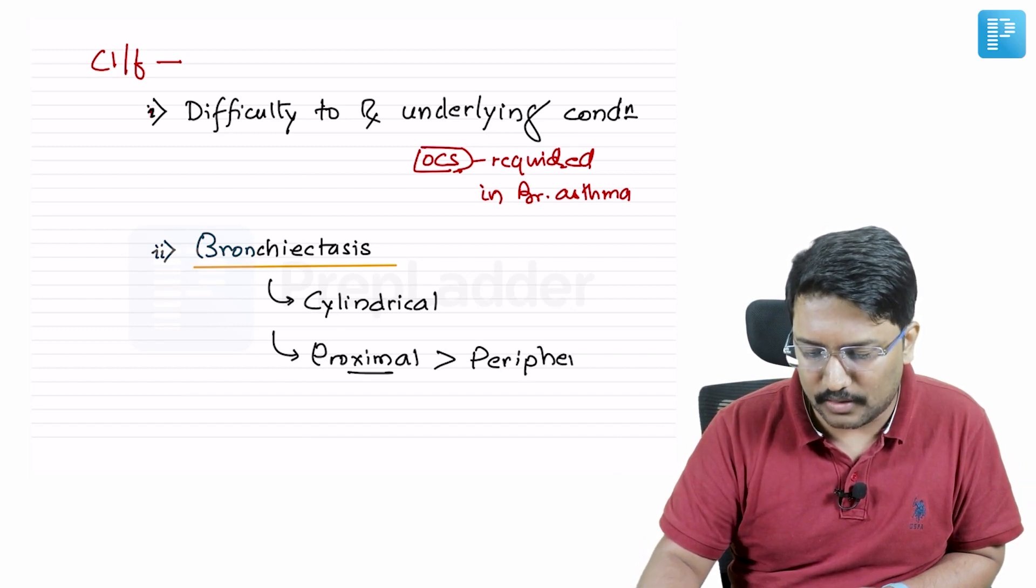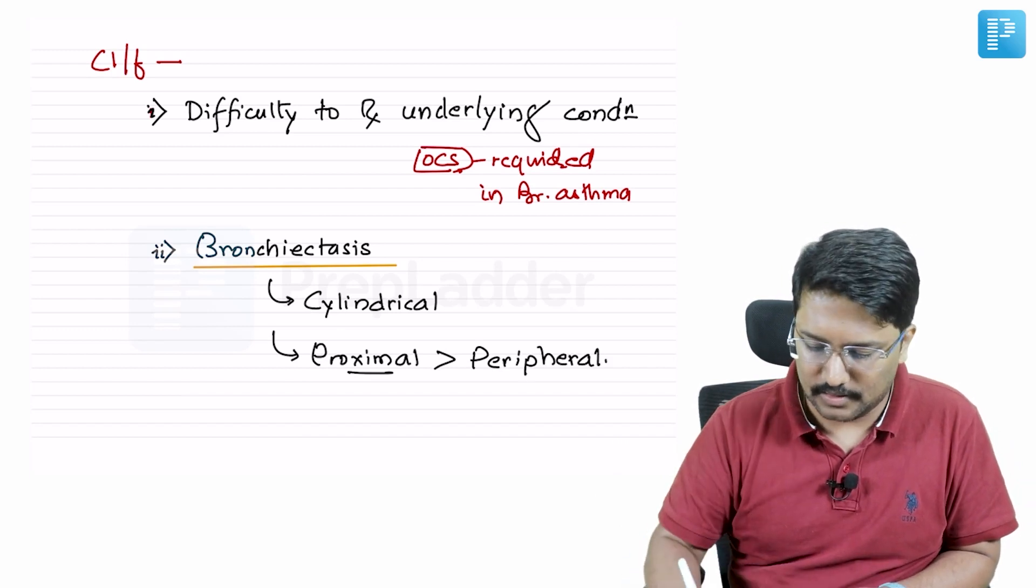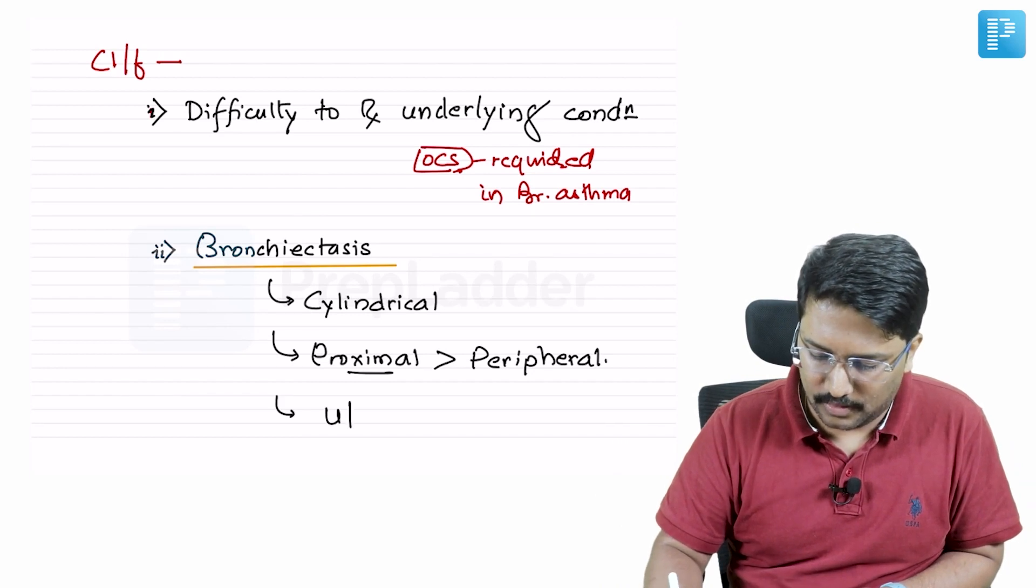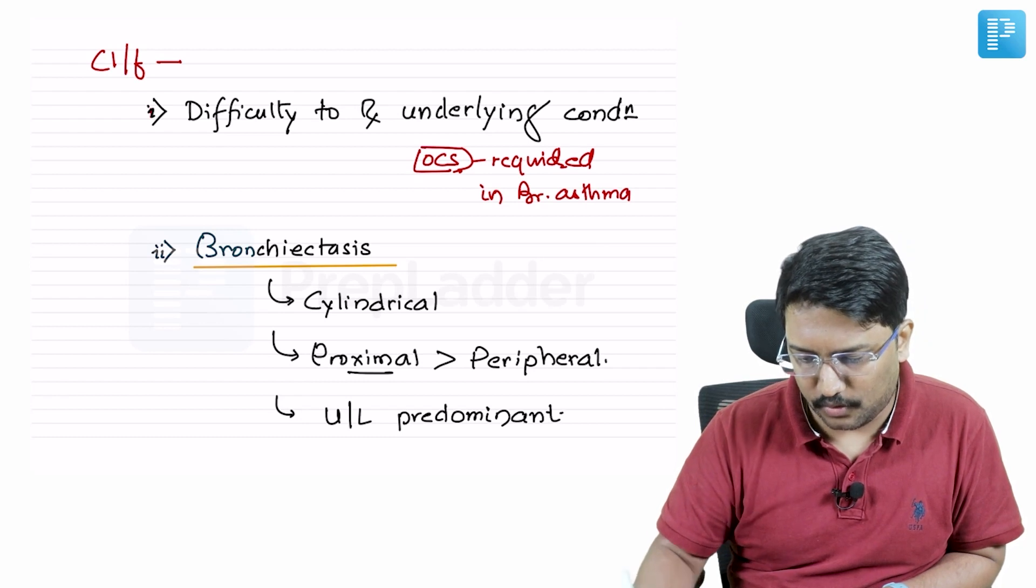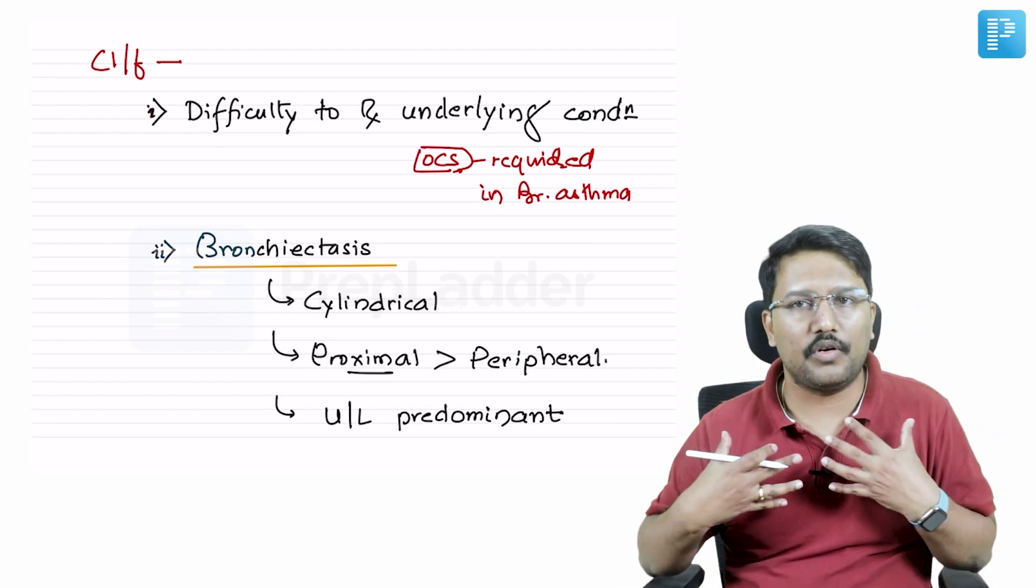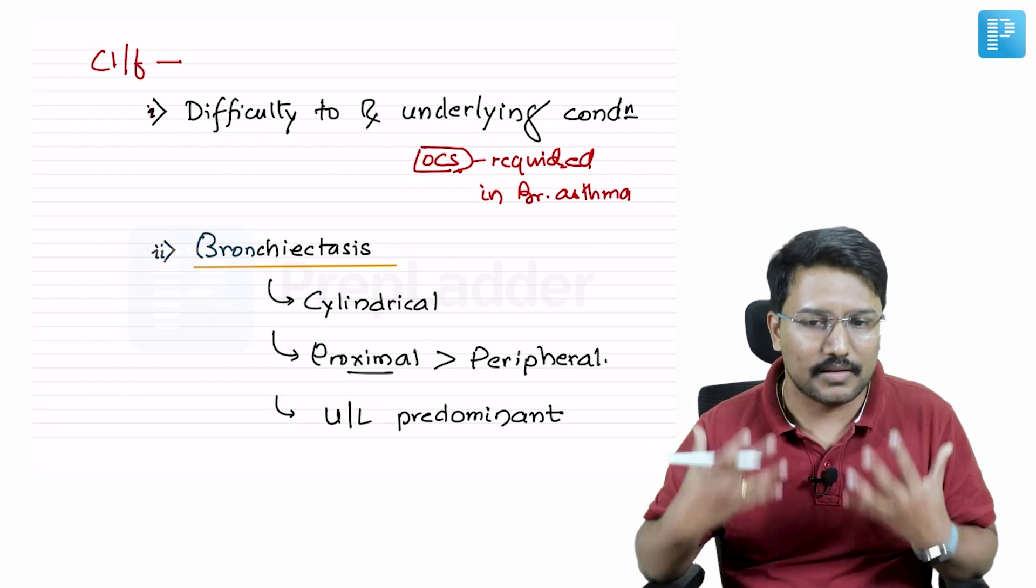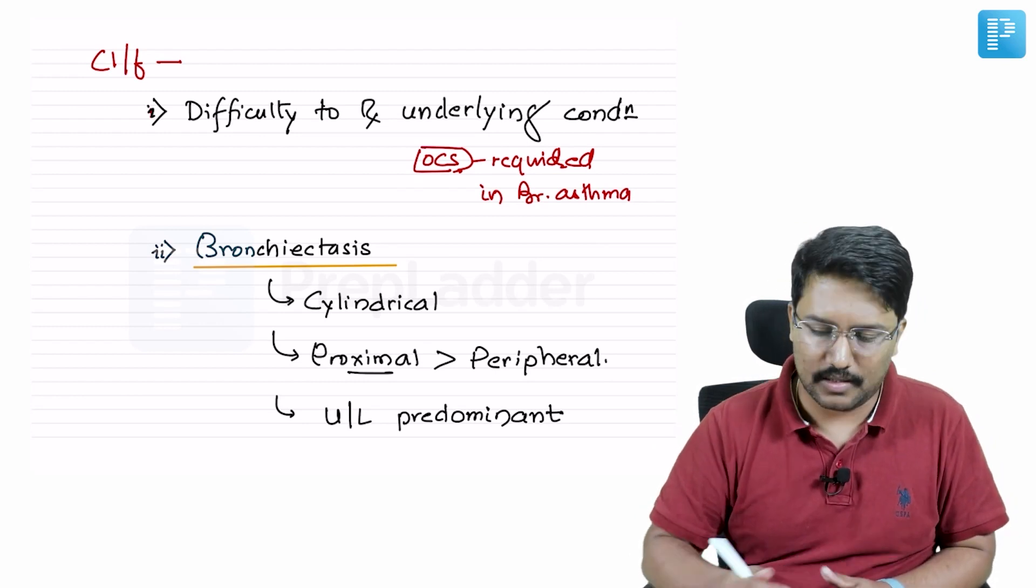Or you can call these as central bronchiectasis, and it is usually upper lobe predominant. Upper lobe predominant towards the hilum—that is the bronchiectasis we are seeing.